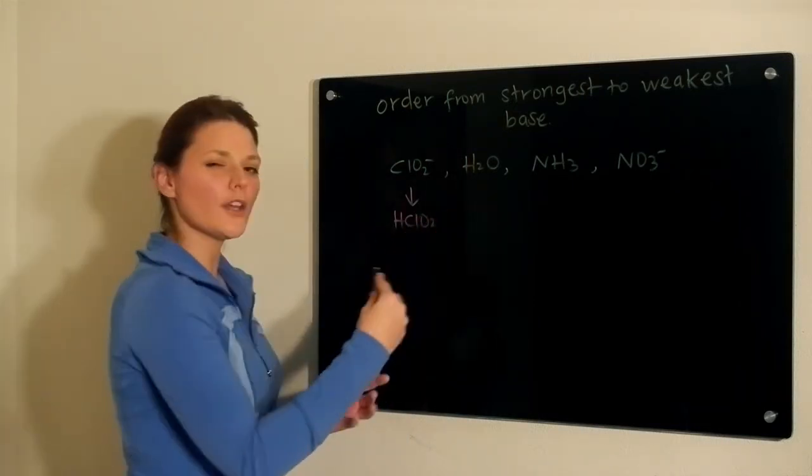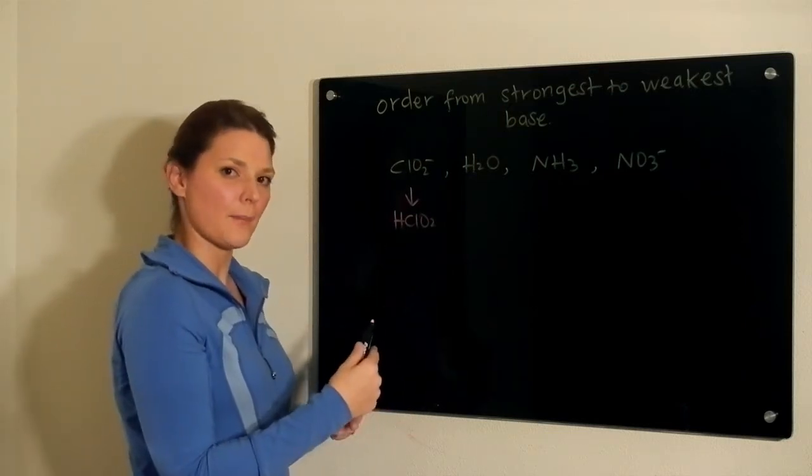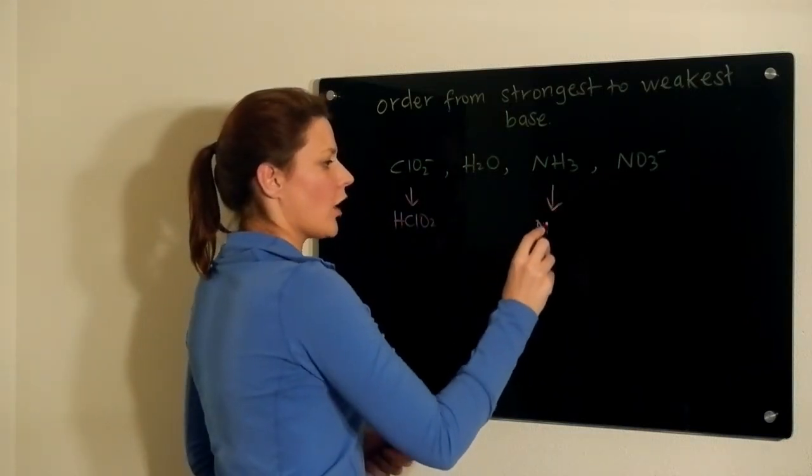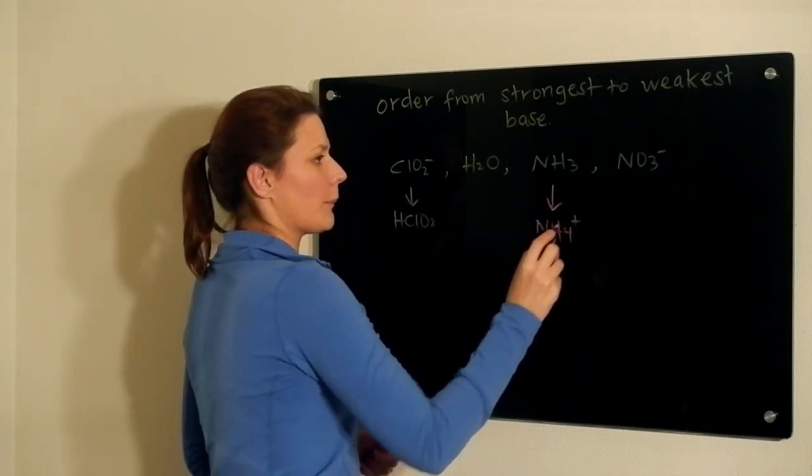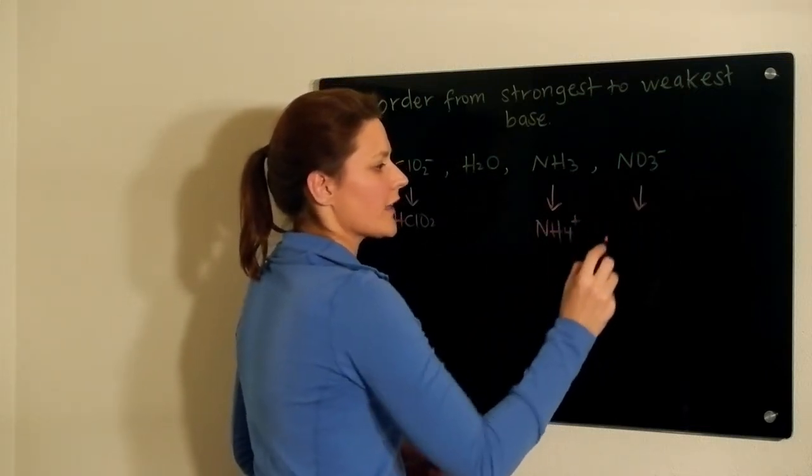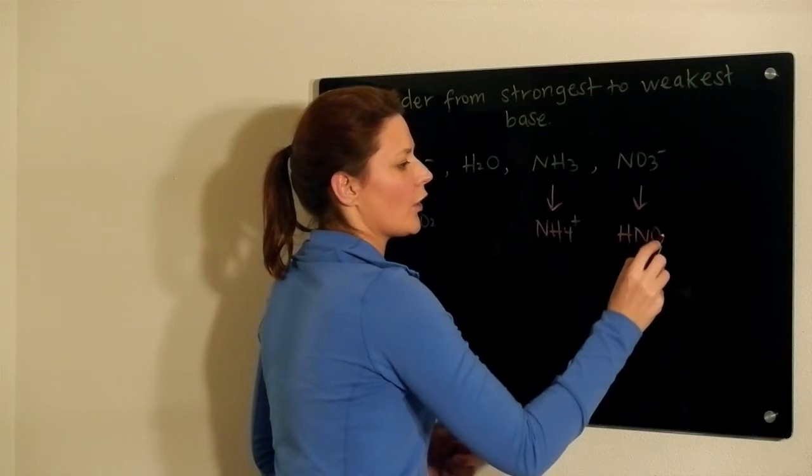Over here we're not going to worry about H2O. We'll come back to that problem. NH3 would have a conjugate acid of NH4+, and nitrate has a conjugate acid HNO3.